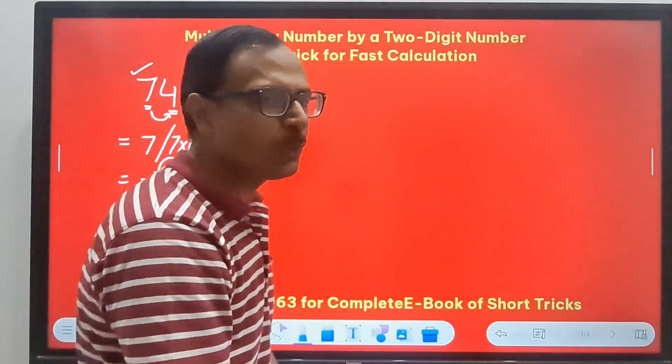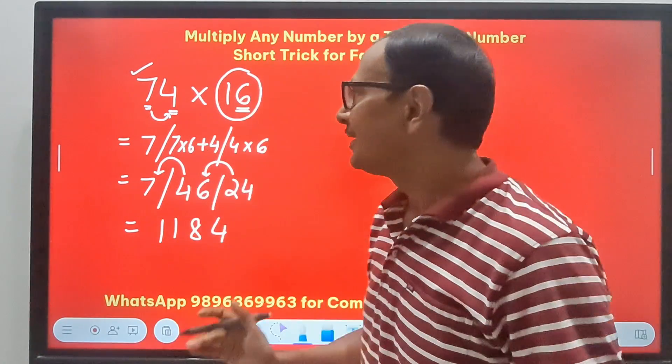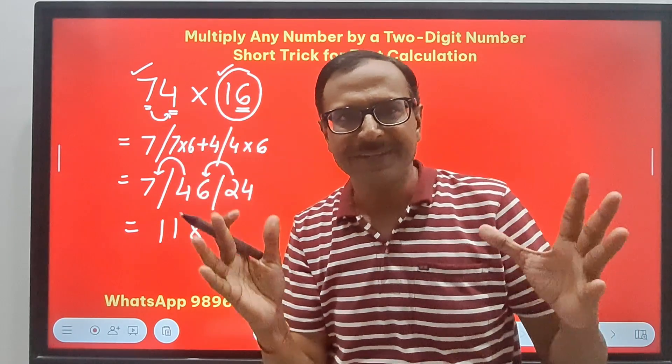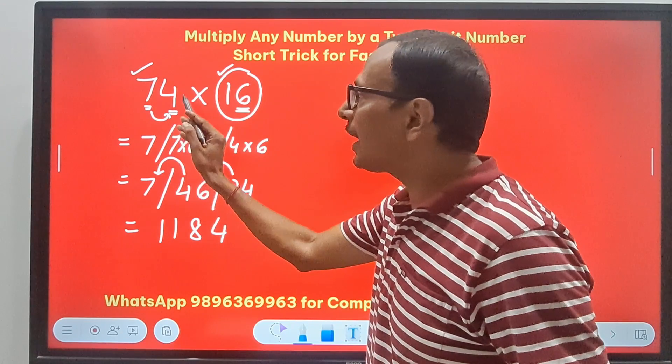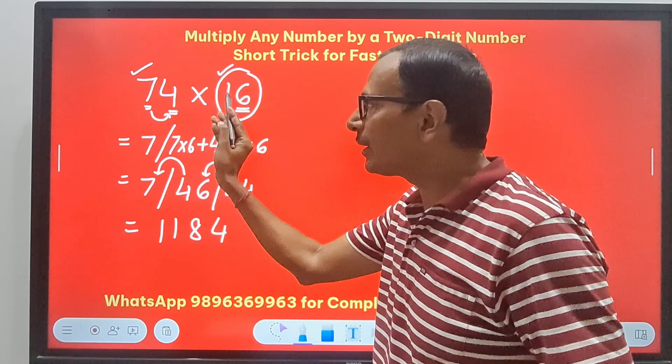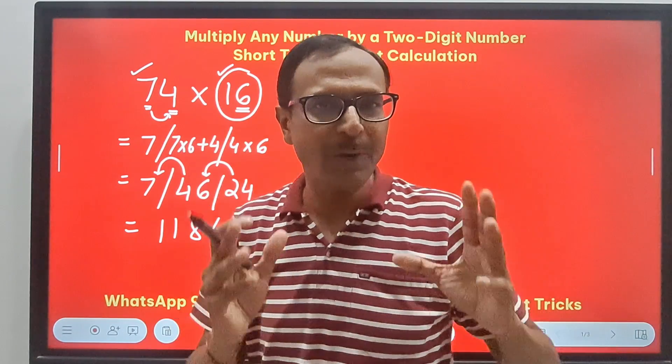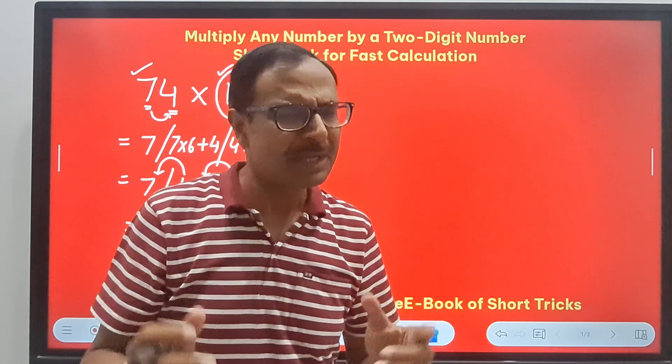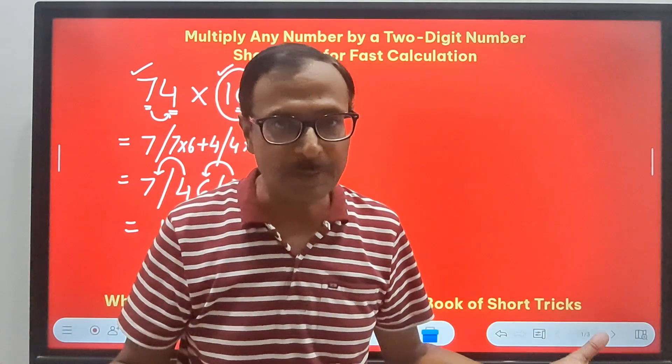You can pick up the calculator and check. What did I do here? Actually, this is an extension of vertical and crosswise. Because there is a 1 here, I don't need to multiply by 1. That is pretty obvious. And that is why I am adding the next digit. Actually, I am adding 4 times 1. But I told you, just add the next digit. That's how smartness works and makes things easier for us.